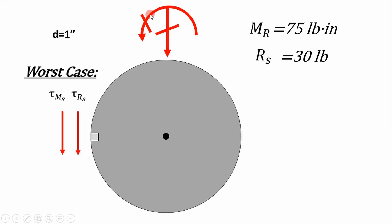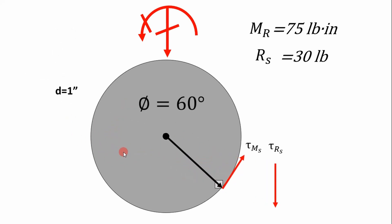The shear stress due to this moment is going to be pointing down. And the shear stress due to this shear force is going to be pointing down right here. So they add up together. That's going to be our worst case. But once again, I want you to realize that you have more power to this. You can determine shear stress at an arbitrary location.